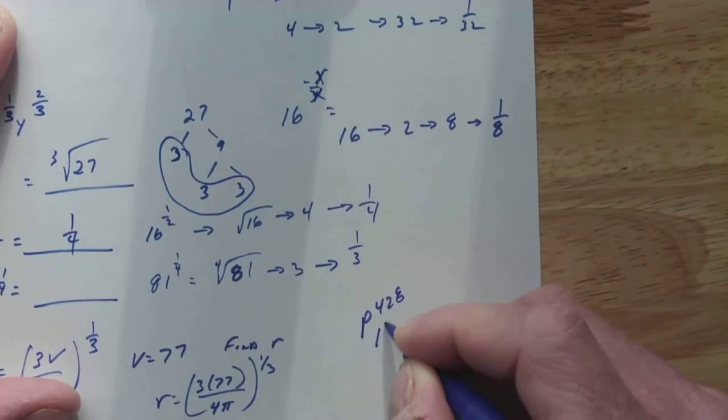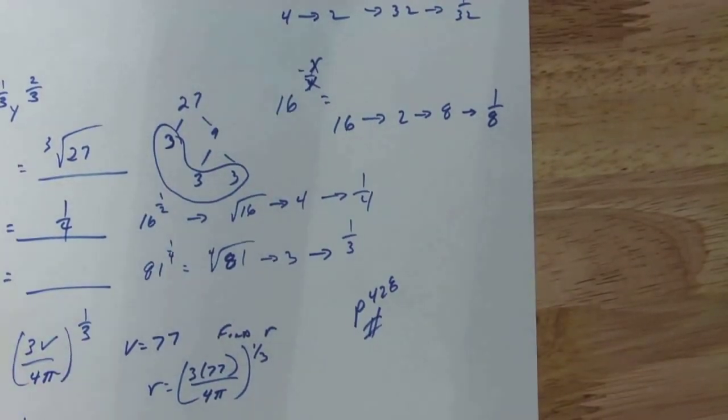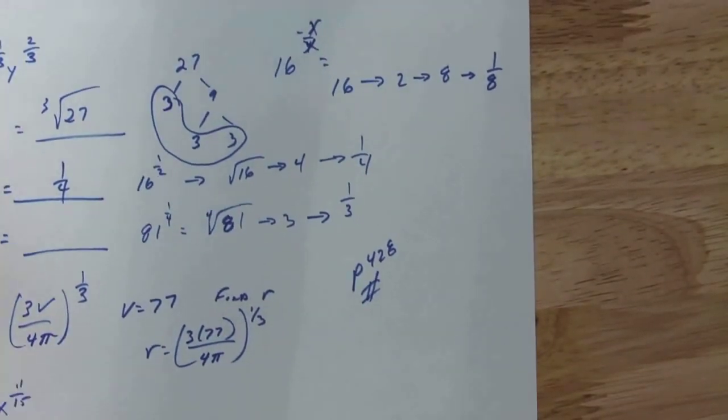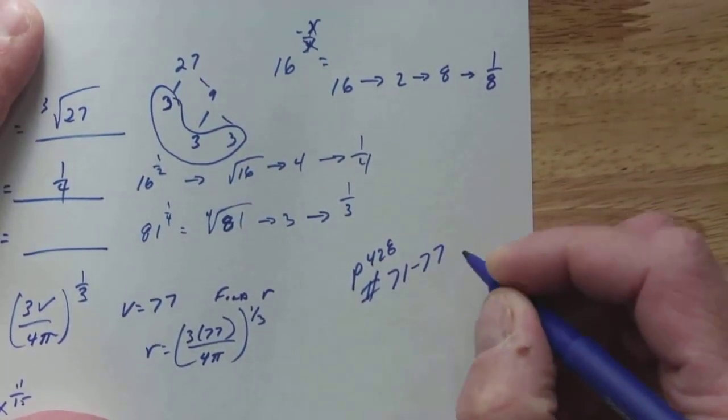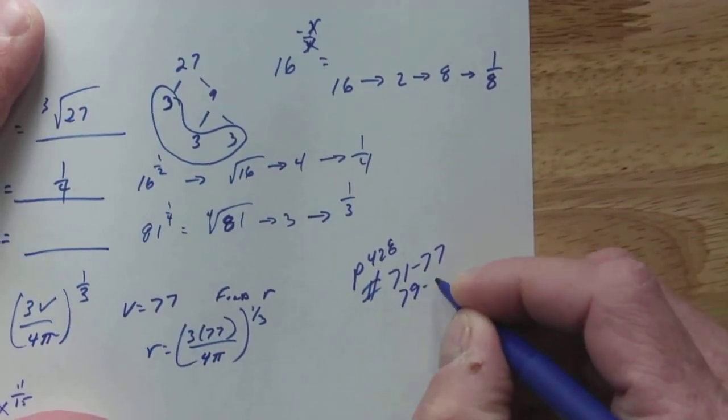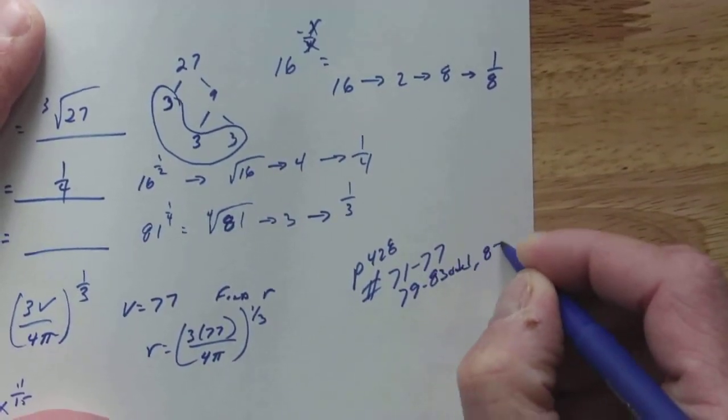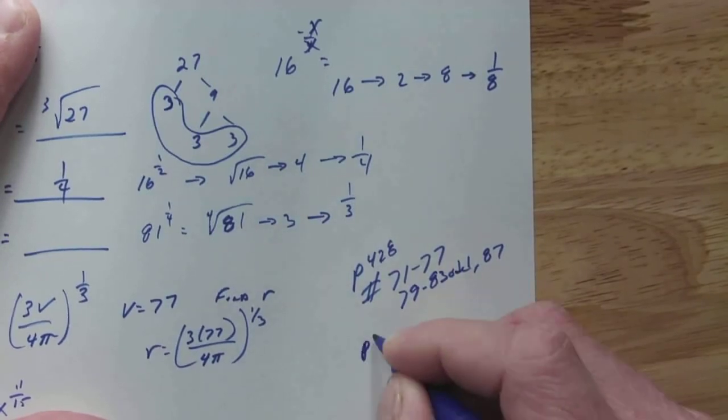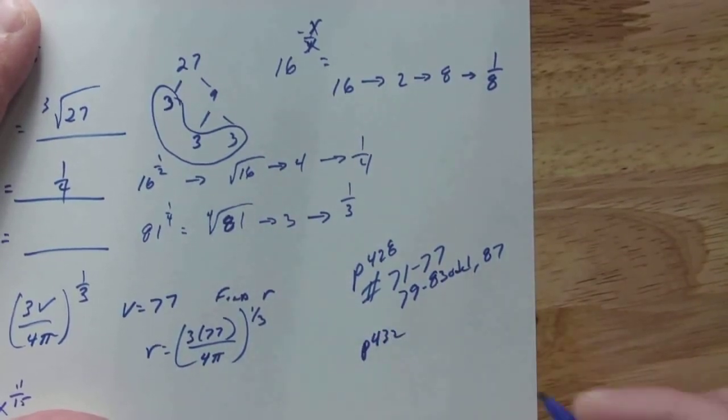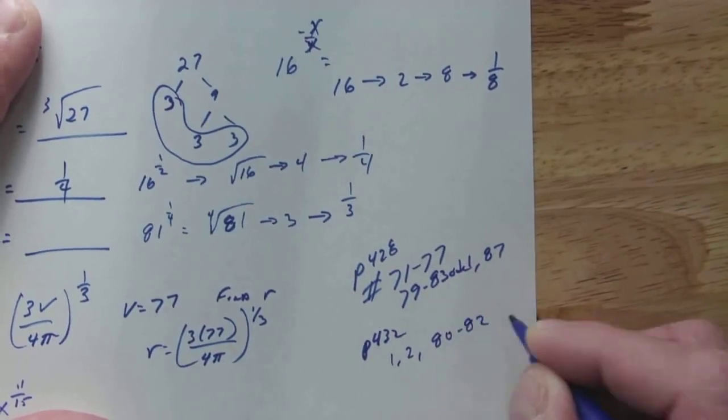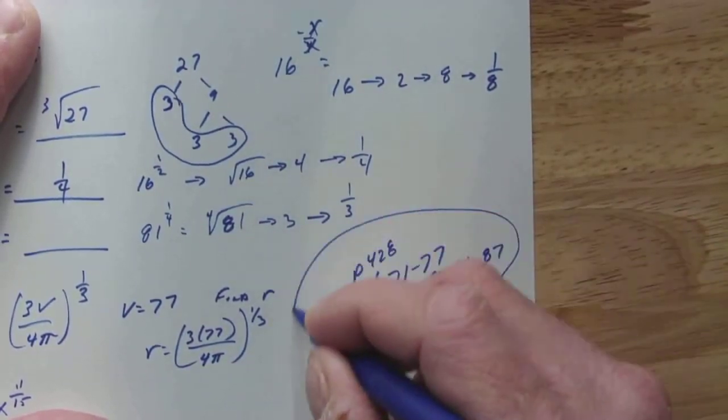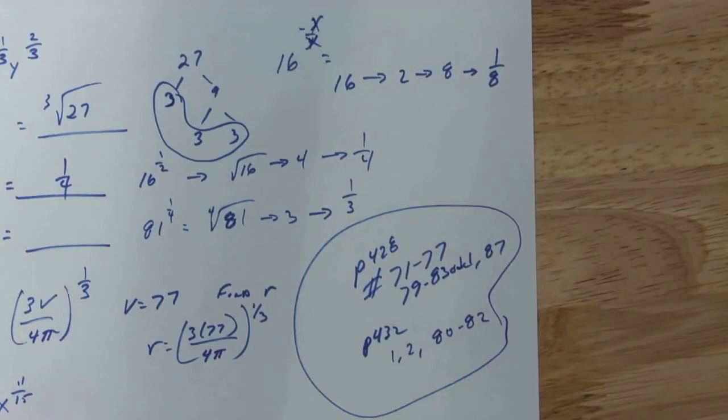So here's what I want you to do. 428. Numbers. I've got to hurry up and get this done so I can get it uploaded. My goal is like 9:30. It's not going to happen today. Let's go 10. 428. 71 through 77. ACT Review. 79 through 83. Odd. And 87. And then we're going to do page 432. Numbers 1, 2, and 80 through 82. There we go.